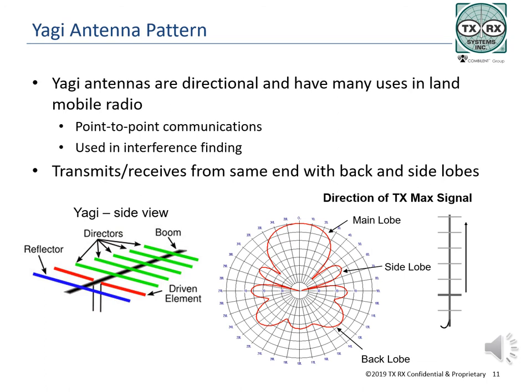The Yagi both transmits and receives in the same direction, from the same end. Be careful to understand the polarity of the antenna, as it must have the same orientation as the antenna it is receiving from or transmitting to, either vertical or horizontal. The orientation of the driven element determines the polarity of the antenna. The Yagi antenna has one active or driven element, which is usually a half-wave dipole, and several parasitic elements. The parasitic elements receive or re-radiate the energy from the driven element.